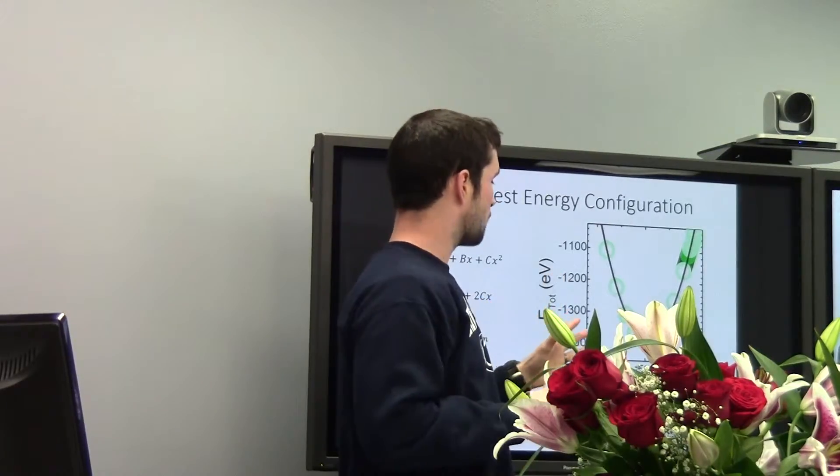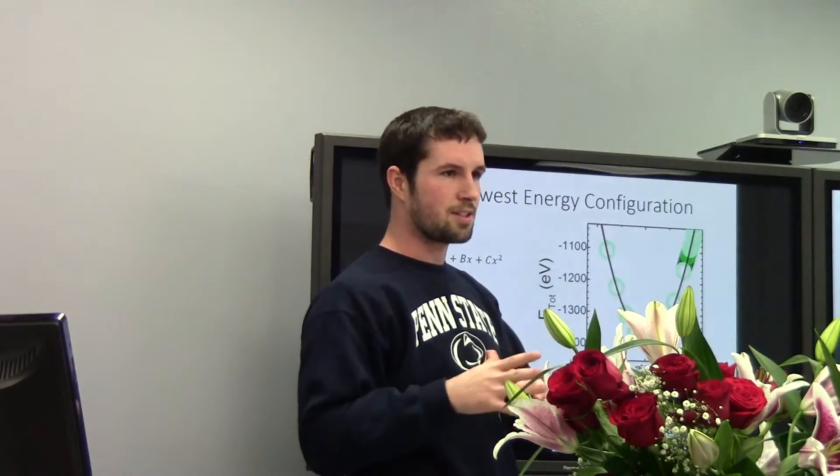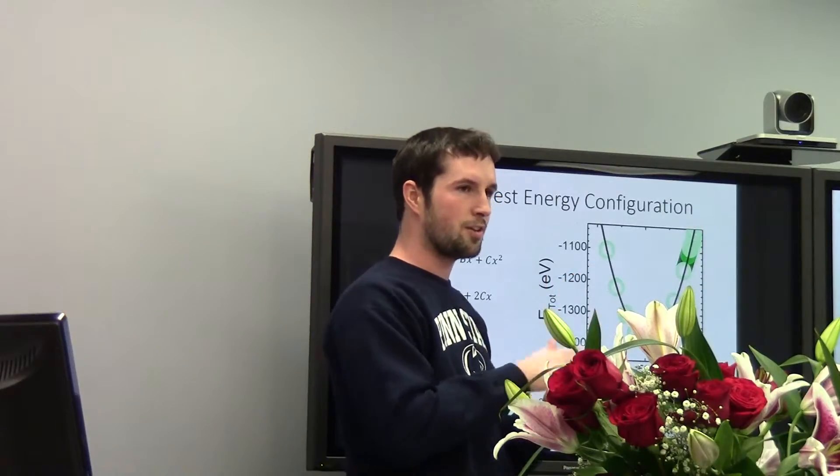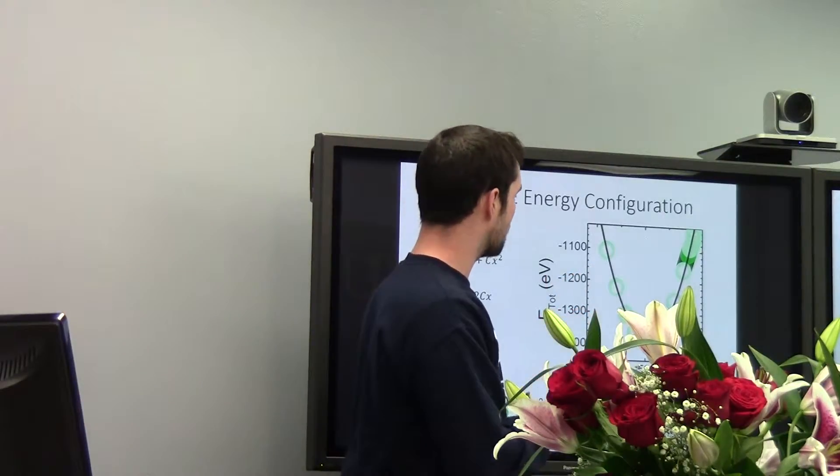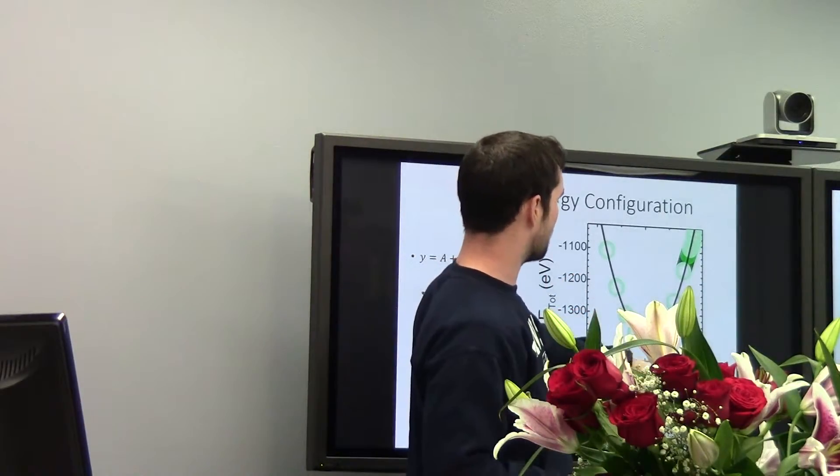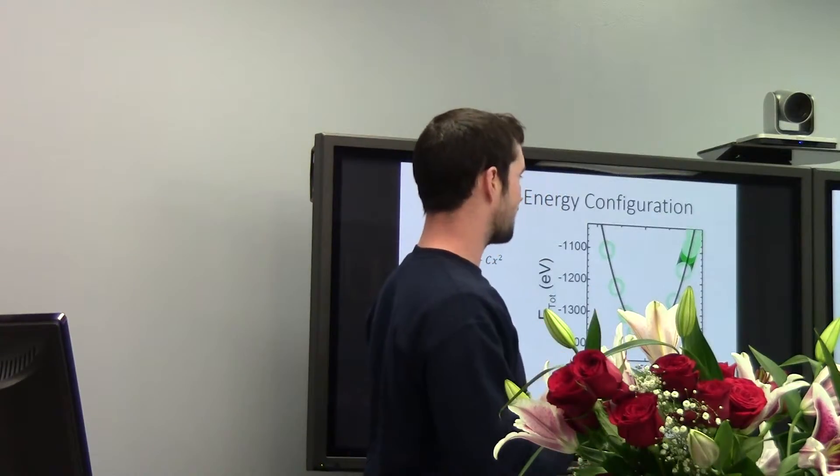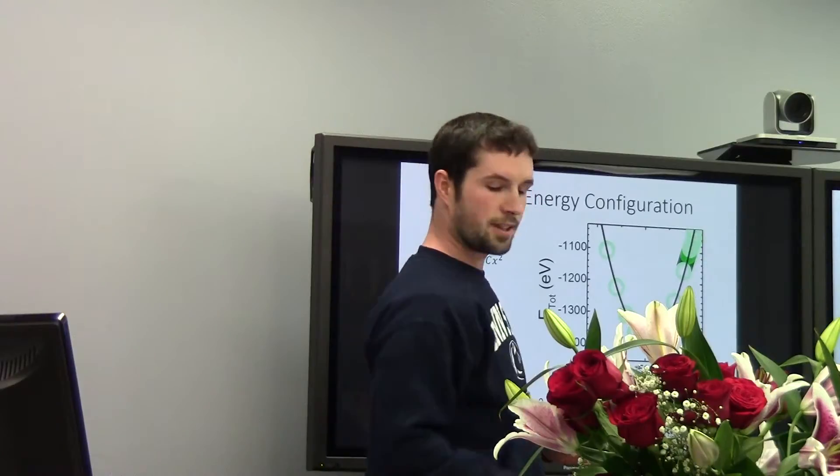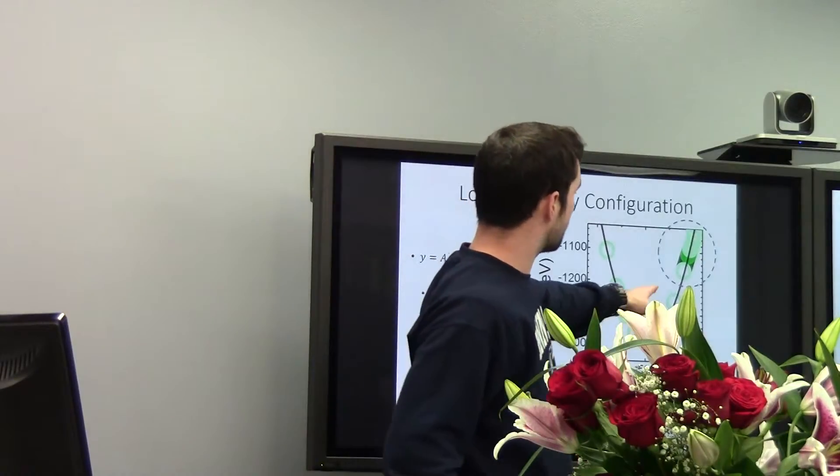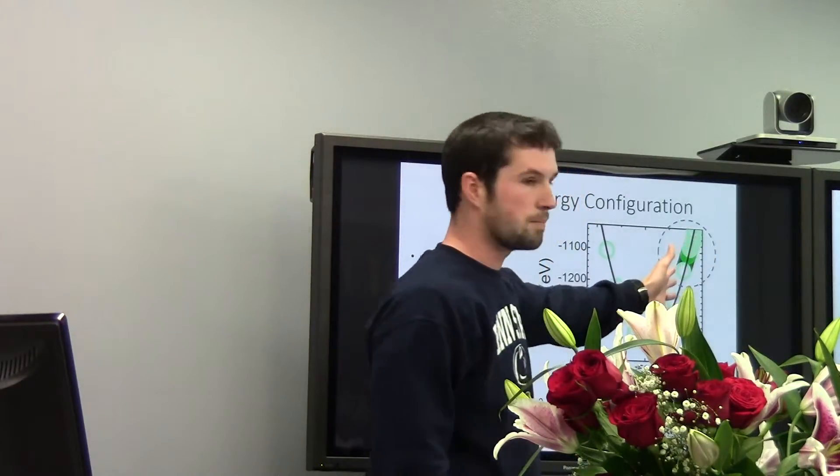So what we wanted to do first was just explore the different oxidation states and charges of the system to see if we could find the lowest energy. And when we did that, we found that the lowest energy was at a charge about negative 500, which is extremely low. So we decided to kind of explore a different area. So we went and looked at the charges around the neutral state.